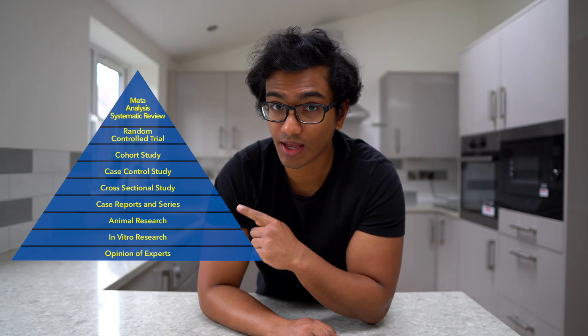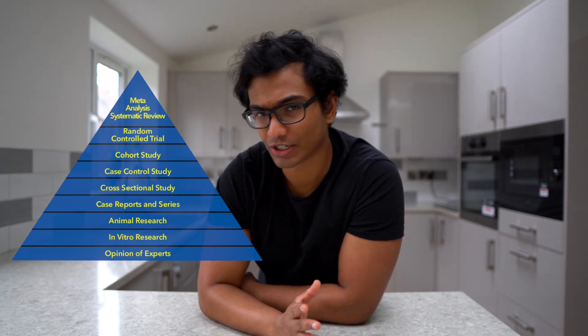The first and easiest thing to comment on when you're analyzing any evidence is to comment on where it falls within the hierarchy of evidence. This is the hierarchy and it looks like a pyramid — well, strictly a triangle, but it's often known as a pyramid of evidence.